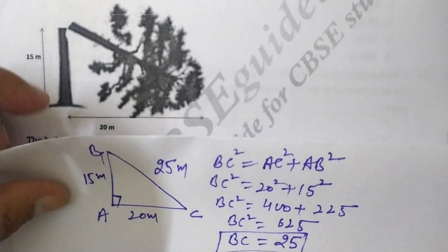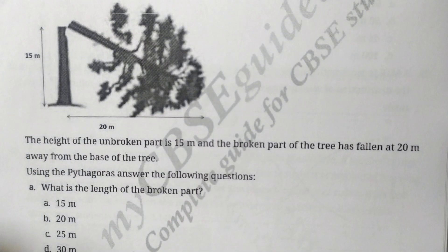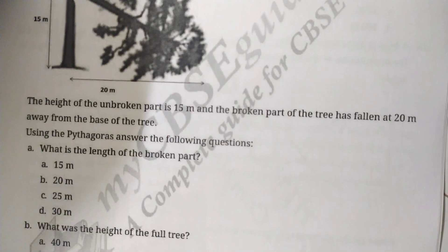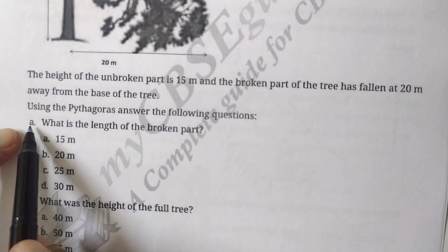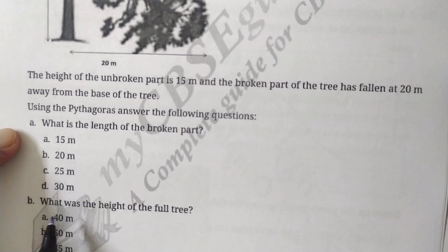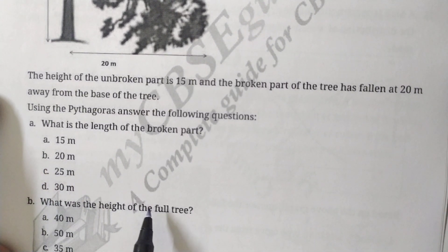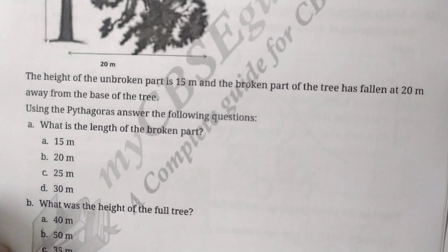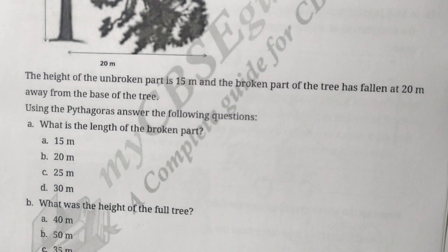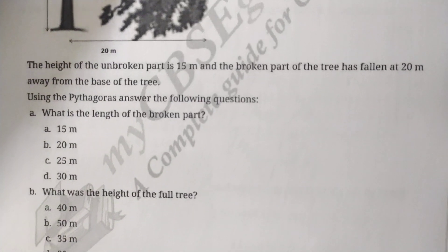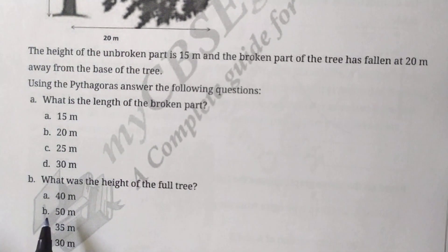Let's see the questions. From part A, the answer is 25 meters for the broken part length. Part B asks what was the height of the full tree? We found the height is 15 + 25, that is 40 meters. So the answer is A, 40 meters.